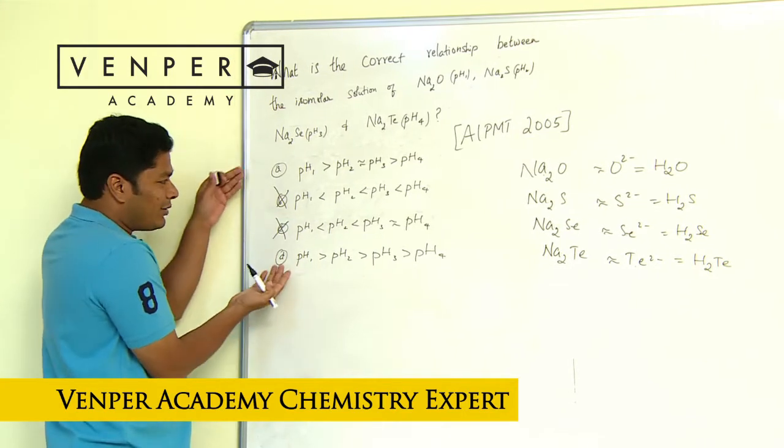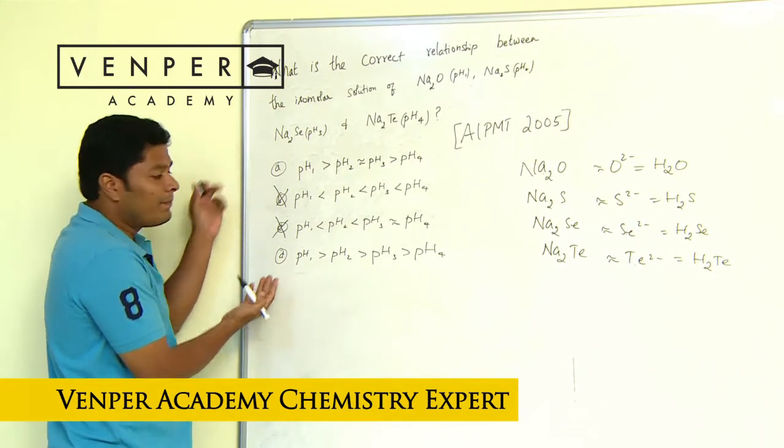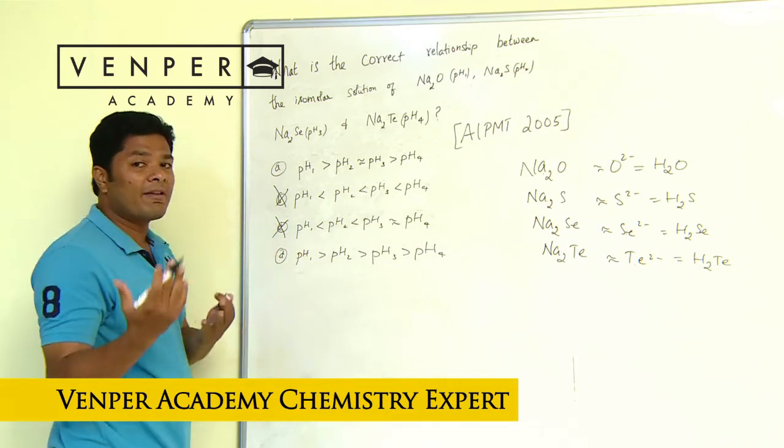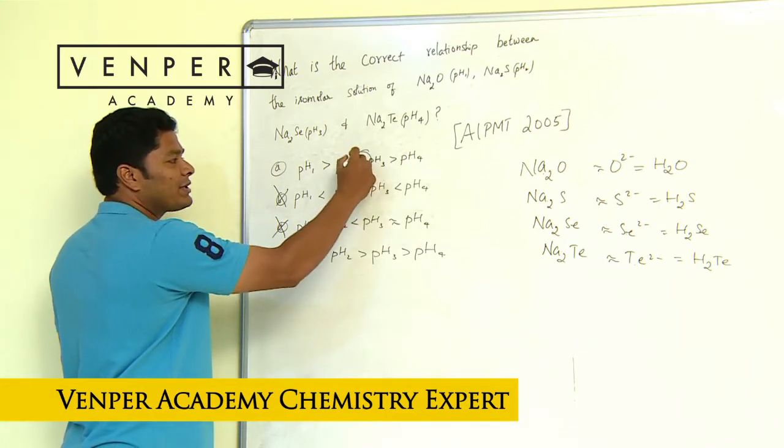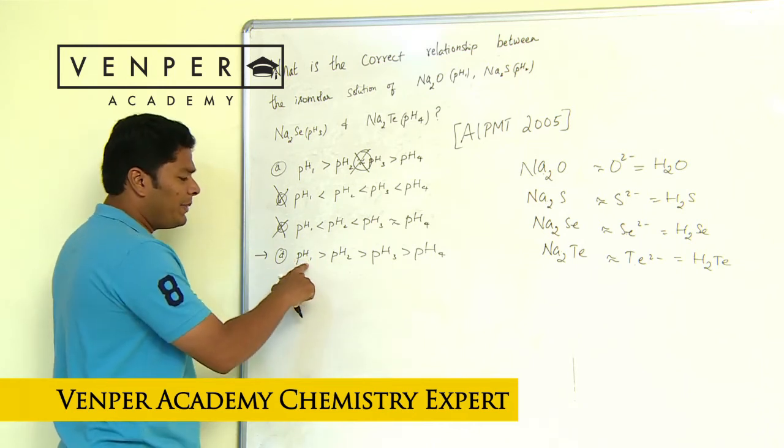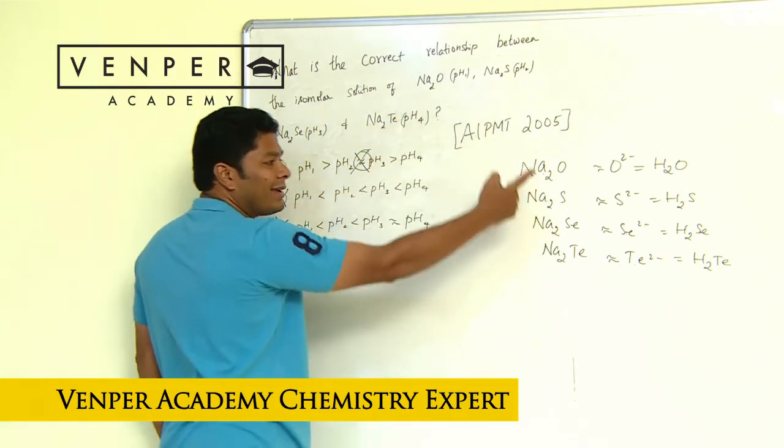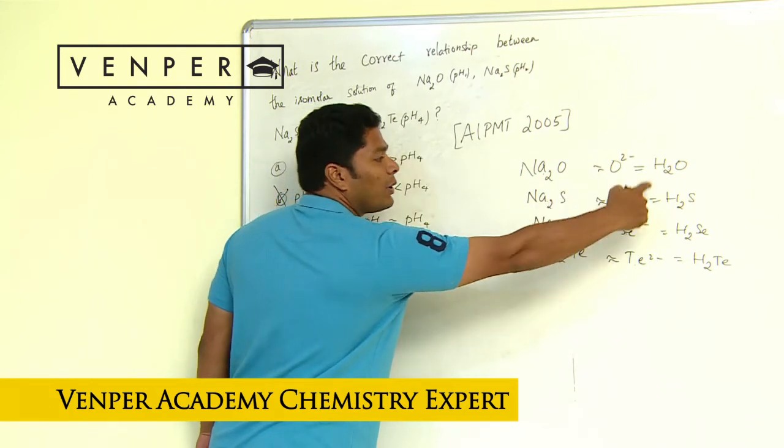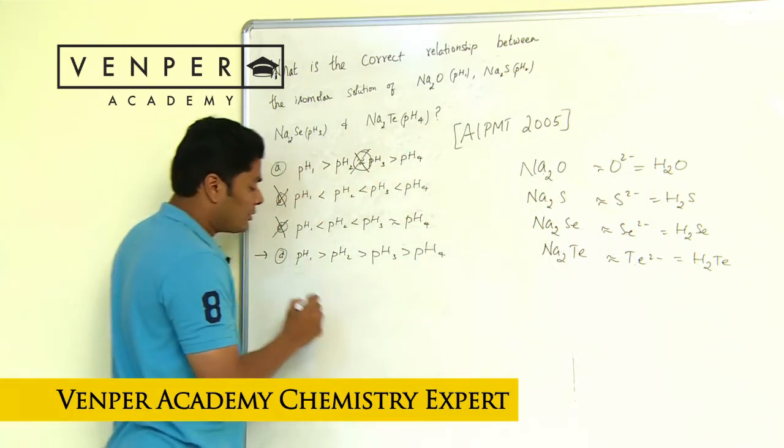Now it looks easier, much better for me. Then in a periodic trend, unless I have given you an exception, you are never going to see this. Right away now, this follows the trend. pH1 meaning pH of Na2O is higher because it's basic, the corresponding acid is the weakest.